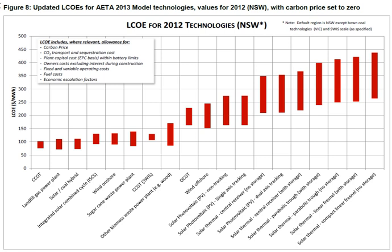The levelized cost of energy is a measure of a power source that allows comparison of different methods of electricity generation on a consistent basis. It is an economic assessment of the average total cost to build and operate a power-generating asset over its lifetime, divided by the total energy output of the asset over that lifetime. The LCOE can also be regarded as the average minimum price at which electricity must be sold in order to break even over the lifetime of the project.